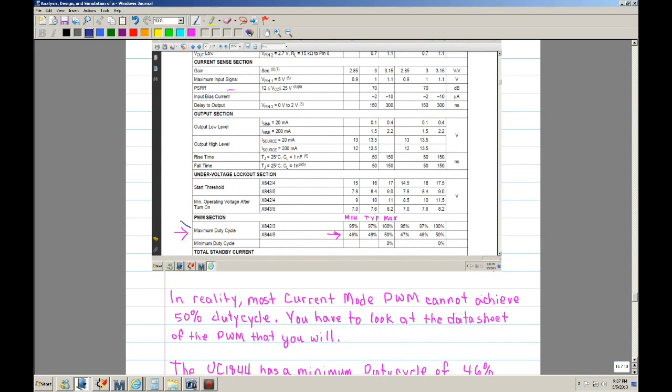There is a section where it says PWM section, and if you notice here, it says maximum duty cycle. If you look in here for the 1844, it has a minimum and a maximum and a typical. If you notice there's a range. The maximum that it can go is 50%, but the minimum is 46%. So in reality, in the real world, this is the number that you're going to be using - 46%, not the 50%. This is actual real world.